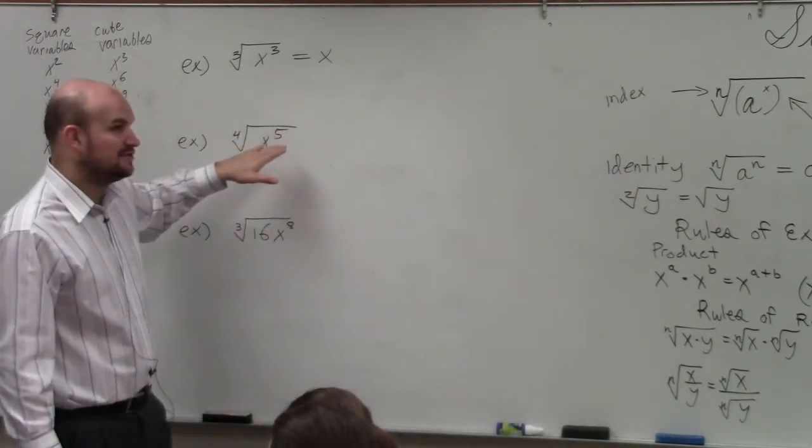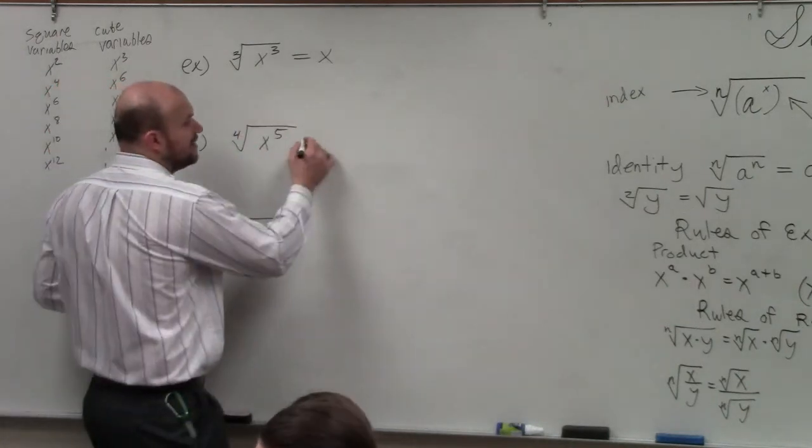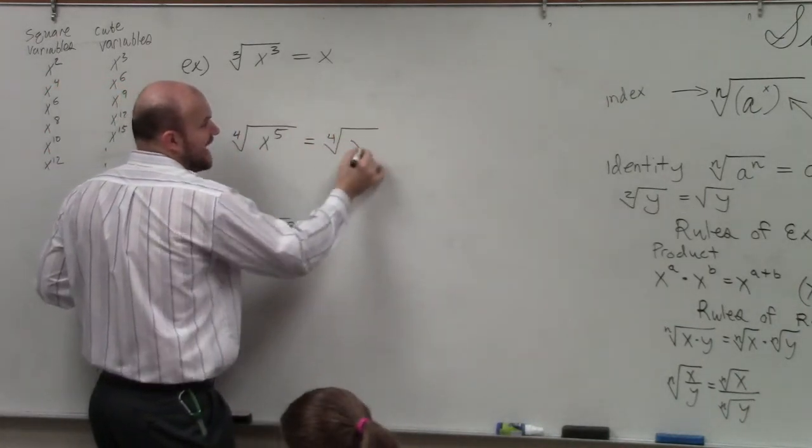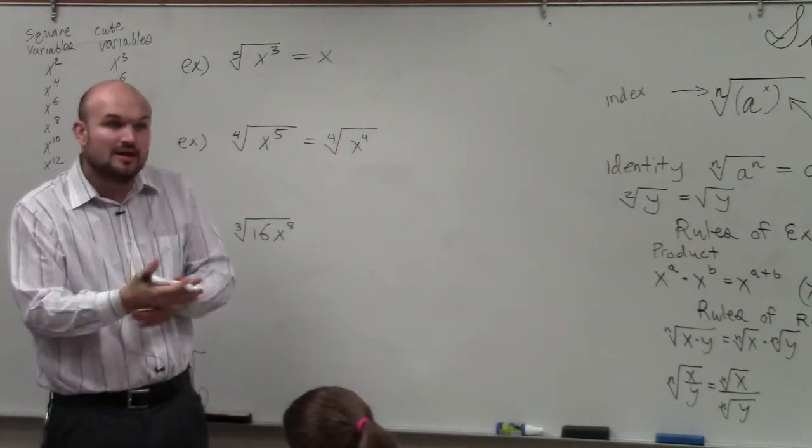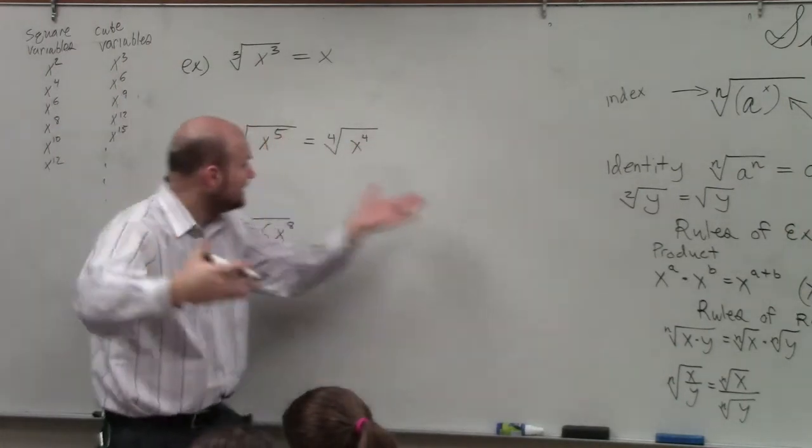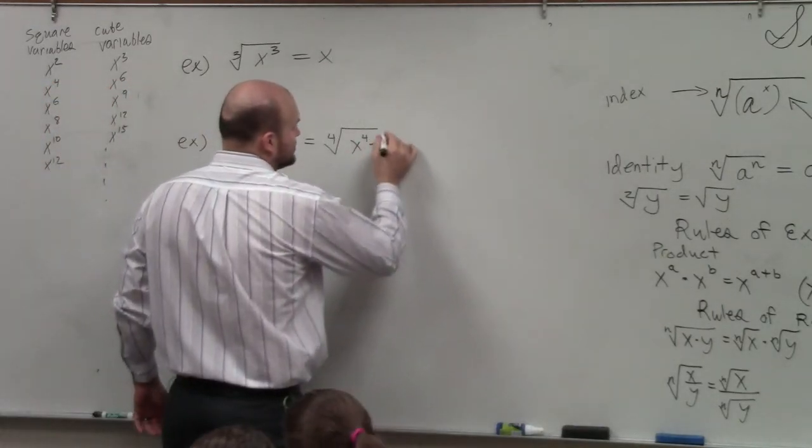Can I rewrite x to the fifth as some other kind of product? Well, I want to rewrite it. I need to have x to the fourth, because that's the only way I can apply the identity element, correct? So x to the fourth times what is going to give me x to the fifth? x to the first power, just x to the first, right?